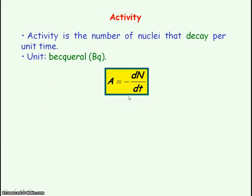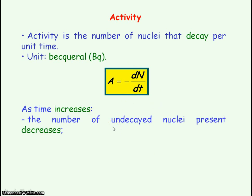And this is the equation for activity where dN is the number of radioactive decays divided by dt, which represents per unit time. The reason why we have a negative sign is because as time increases, the number of undecayed radioactive nuclei present decreases. So that means then that the number of decays that occur per second will decrease and hence activity will decrease.